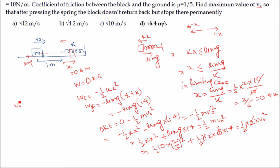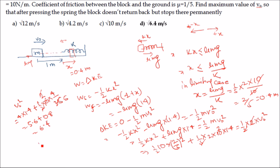Solving: v₀² = 4 × 1.4 + (1/2)(1/2)(10)(4/25) = 5.6 + 0.8 = 6.4. So v₀ = √6.4 m/s. These problems are not complex — just apply the work-energy theorem and conservation of mechanical energy, write the free body diagram, and solve step by step.